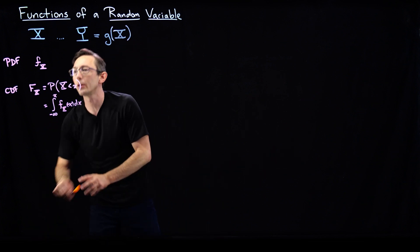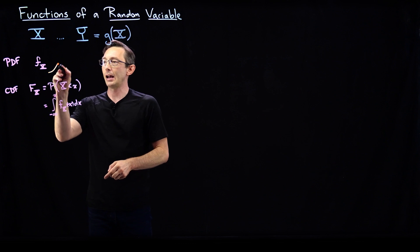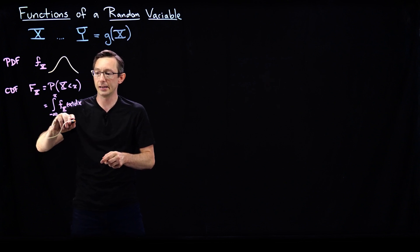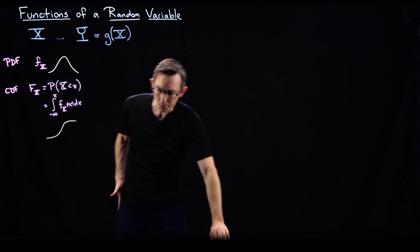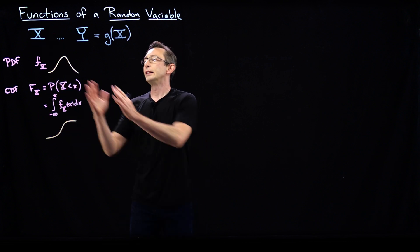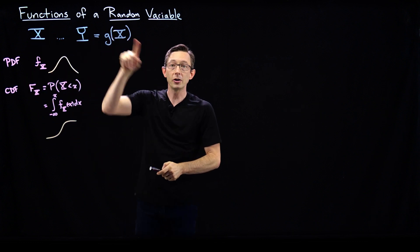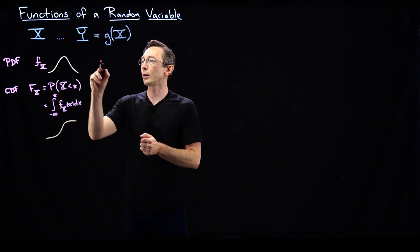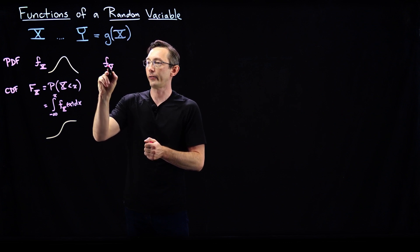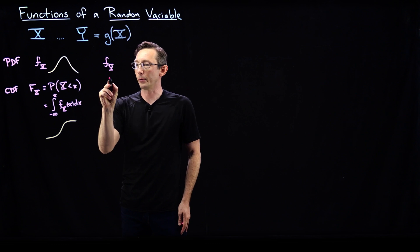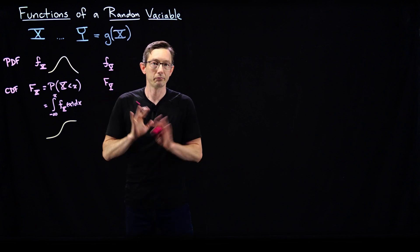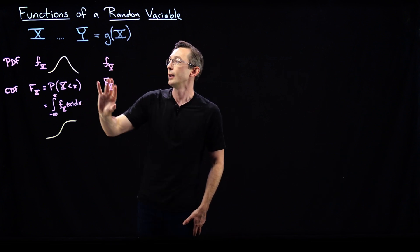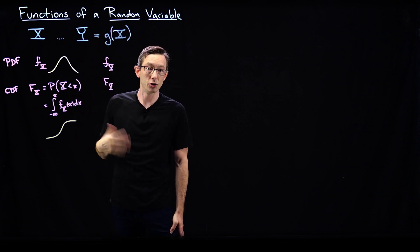We've looked at this before. For example, if my PDF is a Gaussian normal distributed variable, then my CDF is this sigmoidal error function. This is all background. So for my new random variable y, which is a function of x, we want to derive its own PDF and CDF. We'll call the PDF of y, f subscript y, and the cumulative density of y, capital F subscript y. Now we're going to get functions for these in terms of what we already have and the function g.